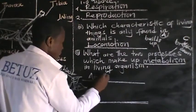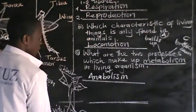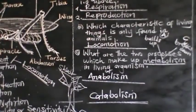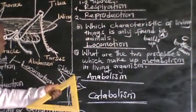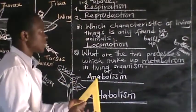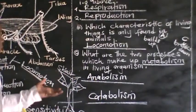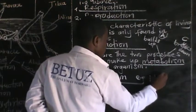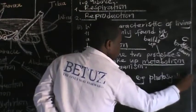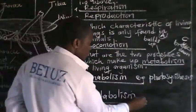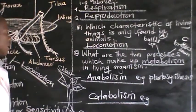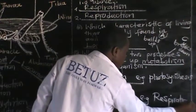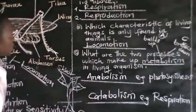So the two processes are anabolism and catabolism. Anabolism is the building up of larger molecules comprised from smaller molecules — for example, photosynthesis. Catabolism involves the breaking down of larger molecules into smaller molecules — for example, respiration, which is the breaking down of glucose to release energy. These are the two solutions we wanted.